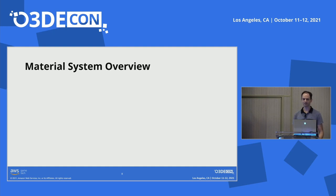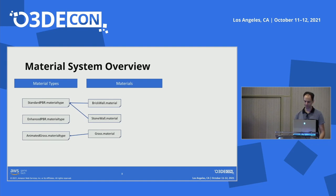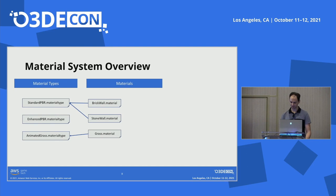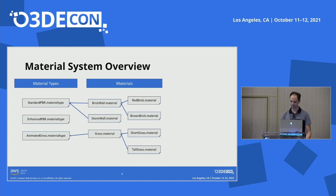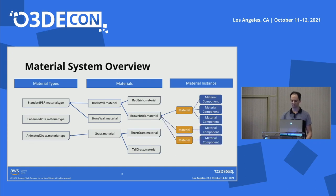Before we get into the next segment, I'd like to give a bit of an overview of the material system. The most common unit is the .material file, which provides all property values to configure the appearance of a surface, and each one references a .materialtype file. This file provides the property layout and links to relevant shaders. Materials can also have a parent material, in which case it inherits the material type and all property values from the parent. At runtime, these assets create one or more material instances in memory that configure draw packets sent to the renderer. By default, material components on multiple entities share one material instance, but we can create a unique material instance to make changes to just one entity.